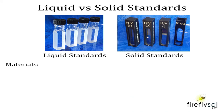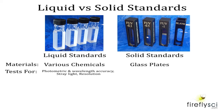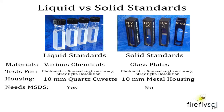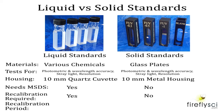Let's recap. Liquid standards are made from chemicals such as holmium perchlorate and potassium dichromate; solid standards are made from glass such as holmium oxide and didymium. Both test for photometric accuracy, wavelength accuracy, stray light, and resolution. Liquid standards are housed in a 10mm quartz cuvette; solid standards in a 10mm metal housing. Liquid standards require an MSDS; solid standards do not. Liquid standards require recalibration on a 1 or 2 year period; solid standards require no recalibration period at all.